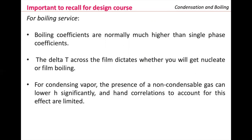You should not forget that boiling coefficients are normally much higher than single-phase coefficients. The delta T across the film will dictate whether you get nucleate or film boiling — as we revised in a problem, changing the excess delta T moves you into different regions of the boiling curve. Knowing that excess delta T, you can locate yourself on the boiling curve and check which region you are working in.